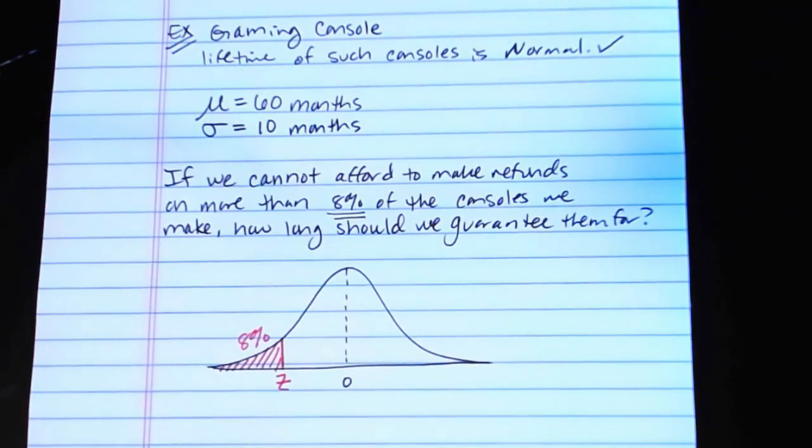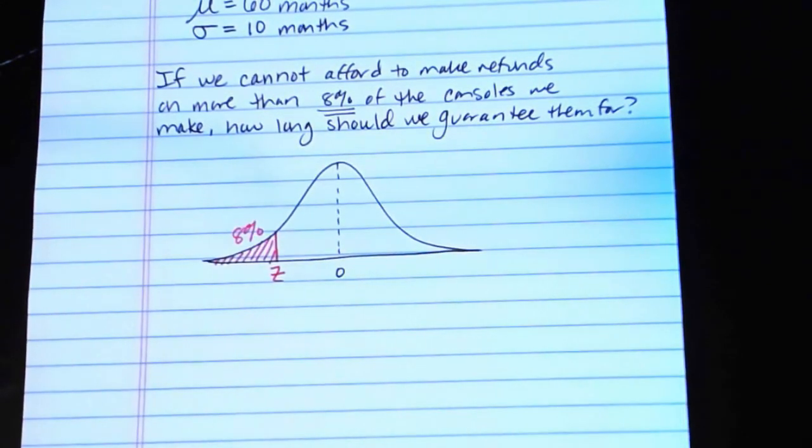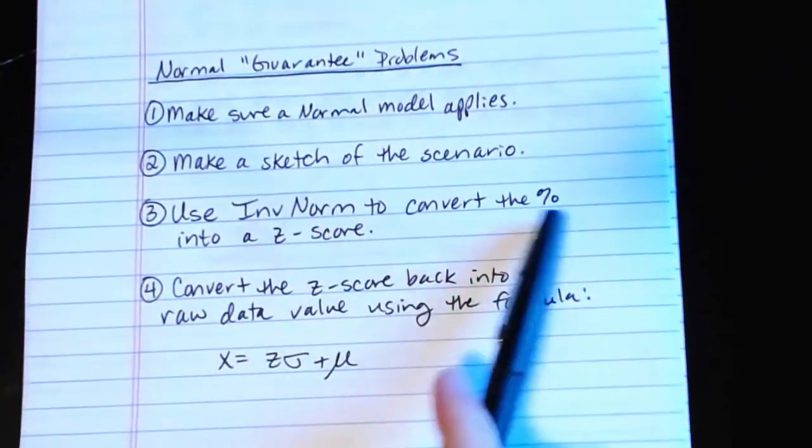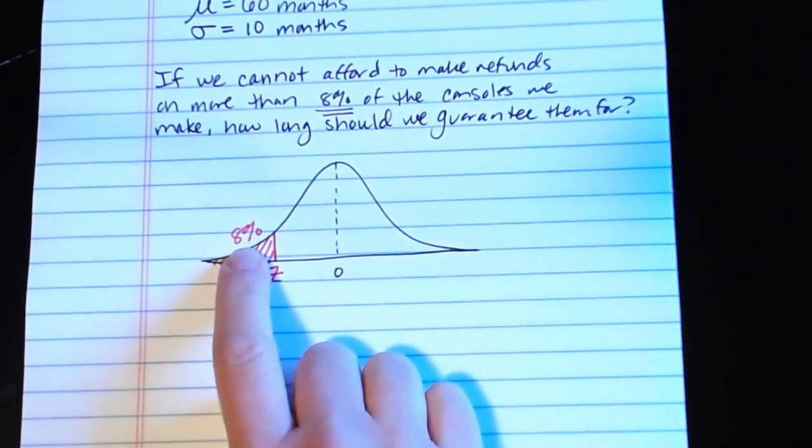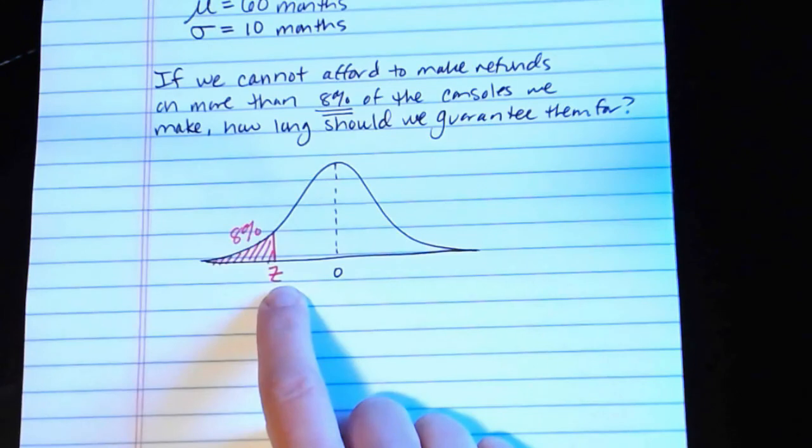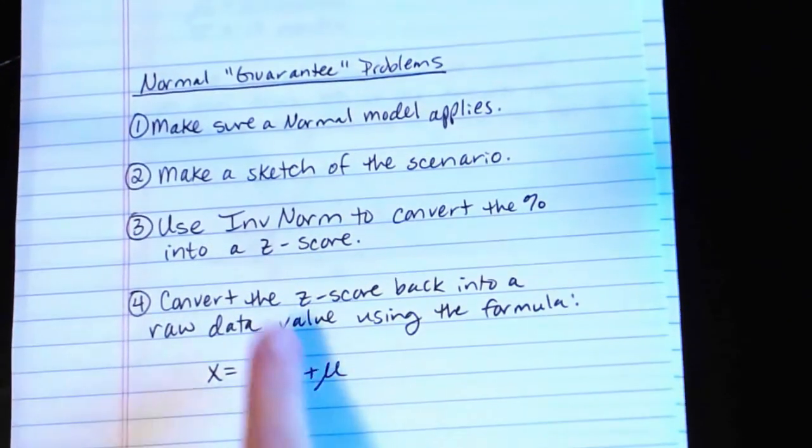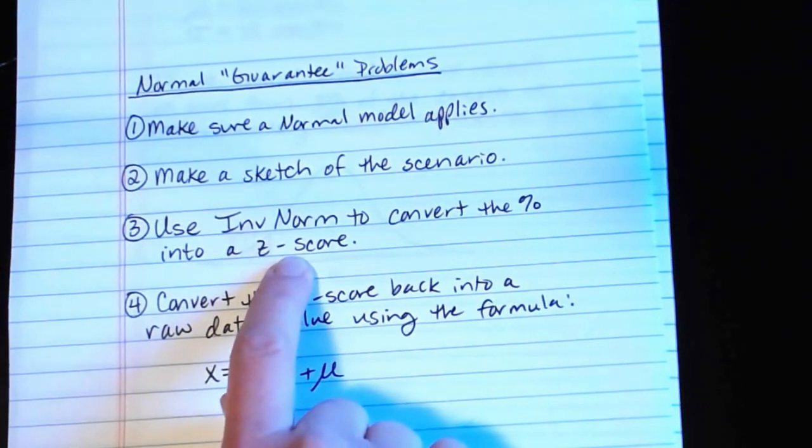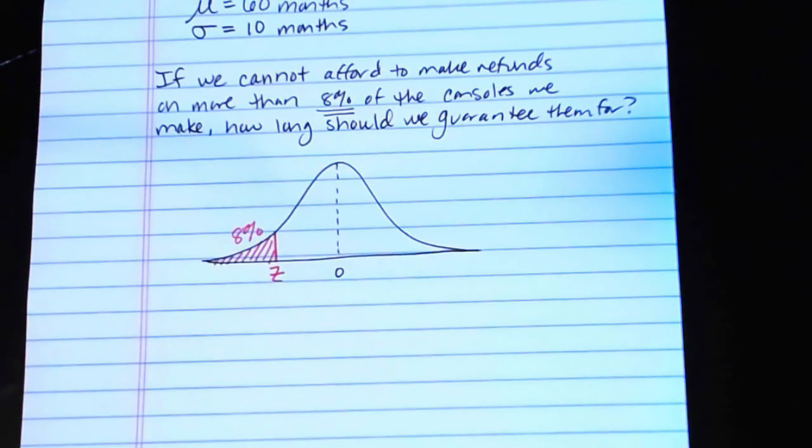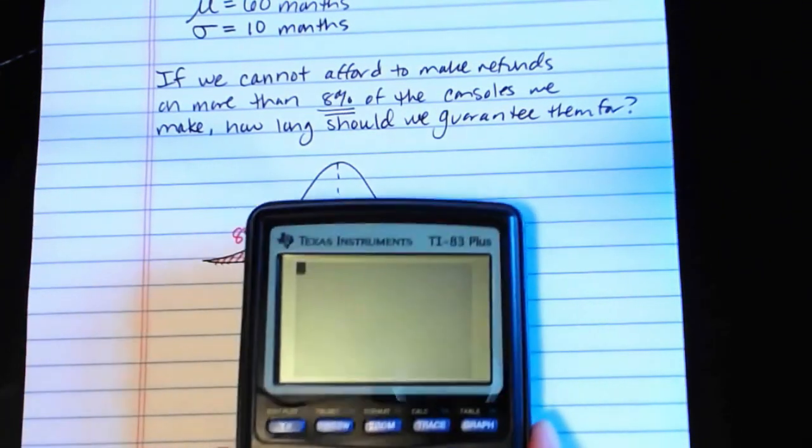This is what the sketch would look like and this is what I'm trying to find. What is this z-score? Then, we use inverse normal to convert the percentage into a z-score. This type of problem, this guarantee problem, is exactly the opposite of what we've been doing. We have had raw data values, converted them into z-scores and used the normal to get the percentage. This time I have the percentage. I want to know what's the z-score that that percentage corresponds to. So I need to use the inverse normal. Inverse normal takes percentages and converts them into z-scores.